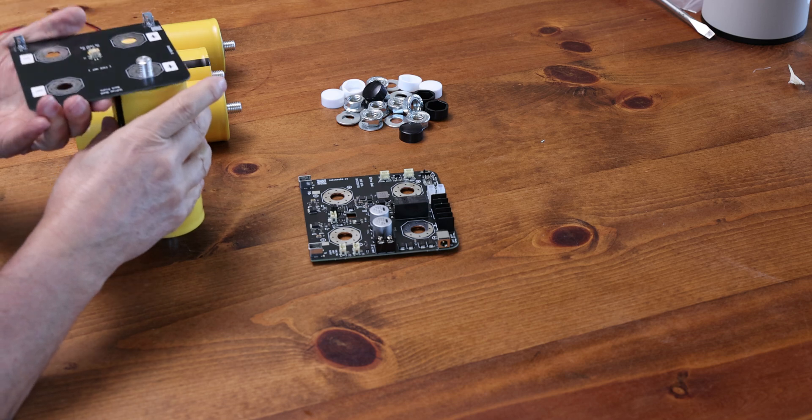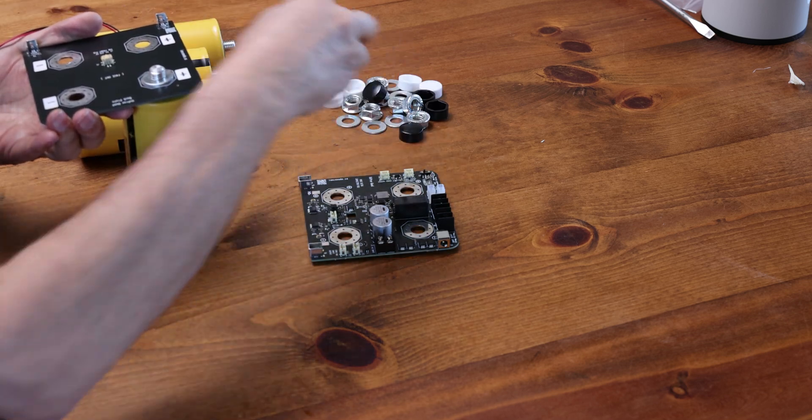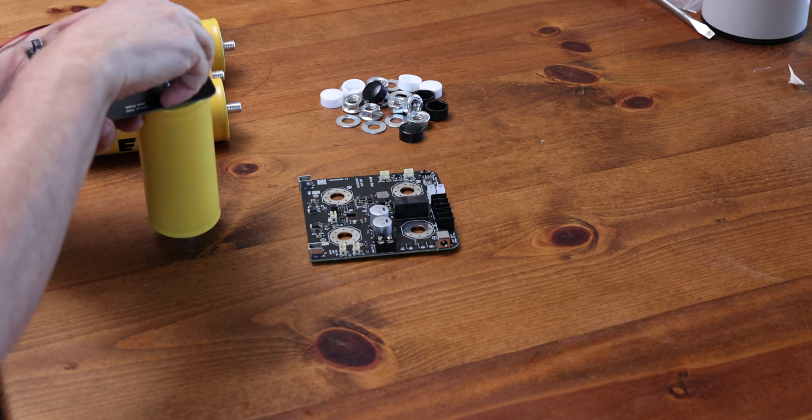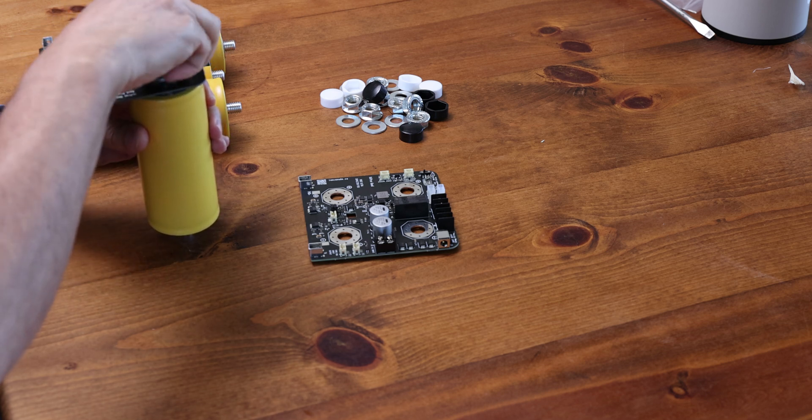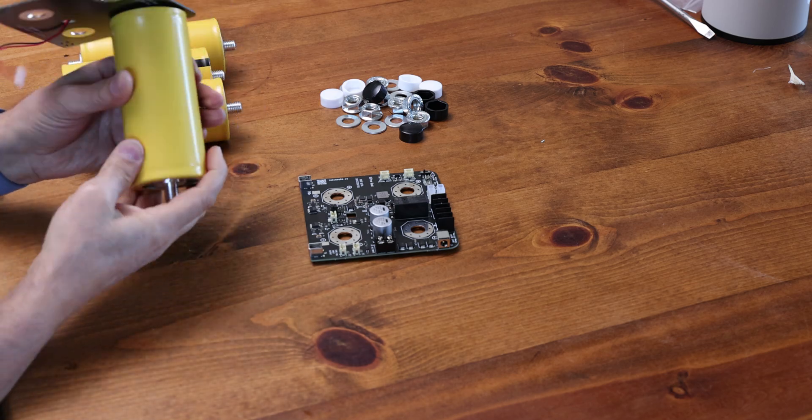That keeps that space between things and then there's a washer on top. So one underneath, one on top and here we go we got one here.